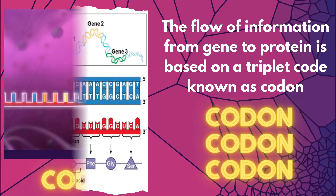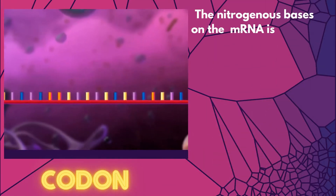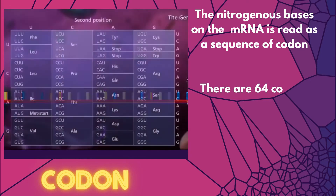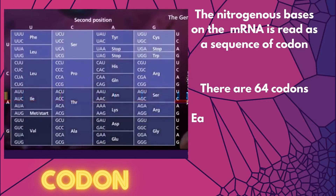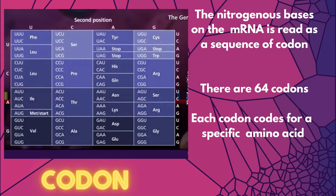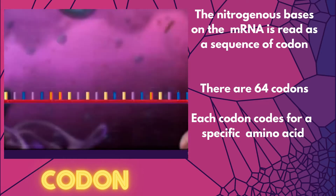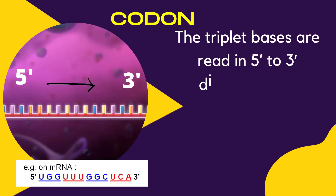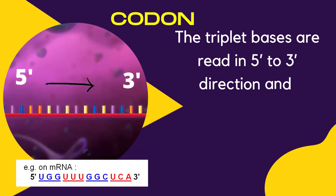The nitrogenous bases on the mRNA are read as a sequence of codons. There are 64 codons, and each codon codes for a specific amino acid. The triplet bases are read in the 5' to 3' direction, and each triplet encodes one amino acid.